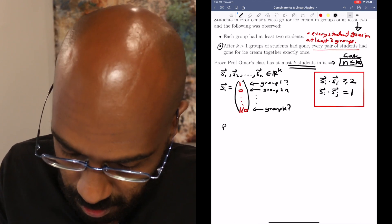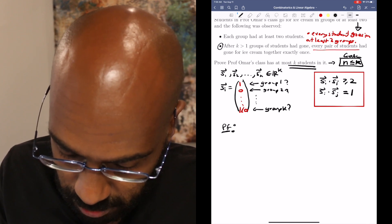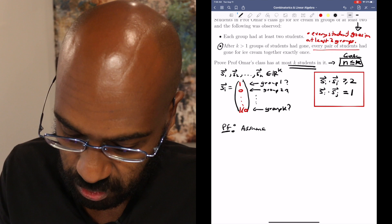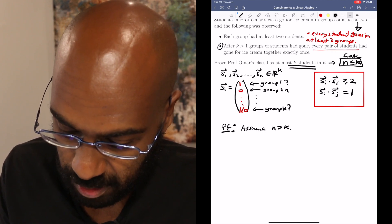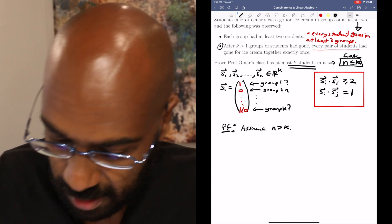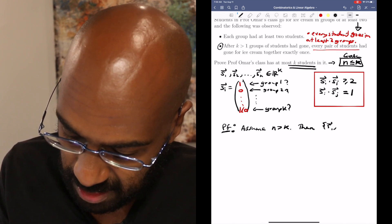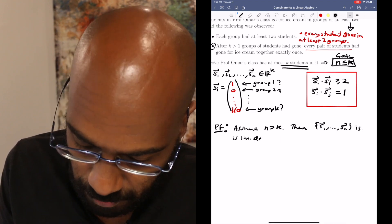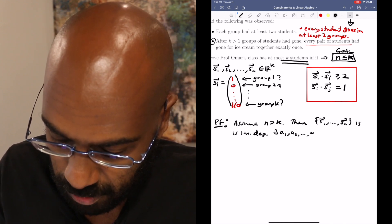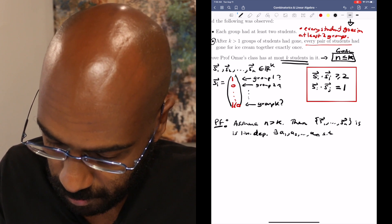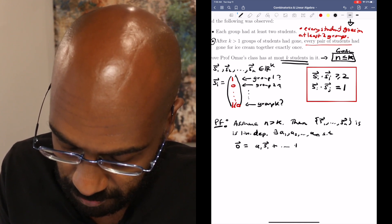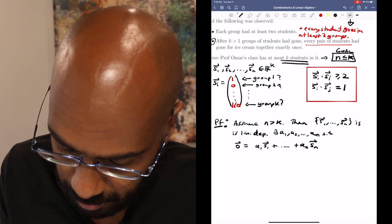Okay, so let's start with proof one. So proof one is going to be a proof by contradiction, which assumes that the goal that we want is not true. So assume n is not less than or equal to k. So in other words, assume that n is actually greater than k. So we have n vectors here s1 through sn that lie in rk and n is greater than k. So that means that this set of n vectors is actually linearly dependent. Okay, so if the set of vectors is linearly dependent, then we can find scalars a1 through an such that the 0 vector is equal to a linear combination with the scalars of these vectors.